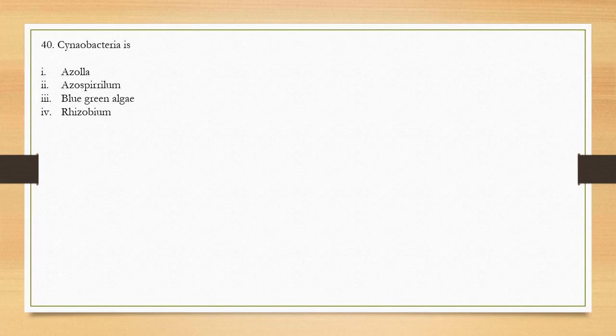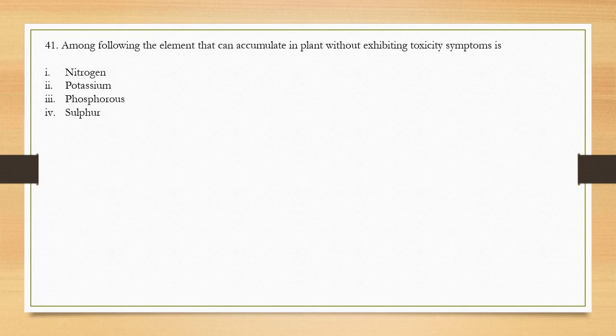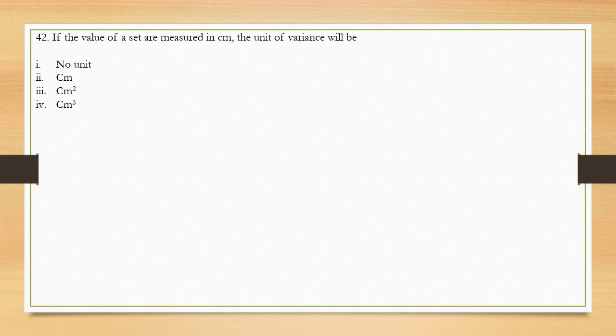Question number 41: The element that can easily accumulate in plants but toxicity symptoms are not easily shown. The options are nitrogen, potassium, phosphorus, and sulfur. According to the presenter, the answer should be phosphorus, as it can be stored in the form of ATP — however the presenter is not fully sure and invites viewers to comment.